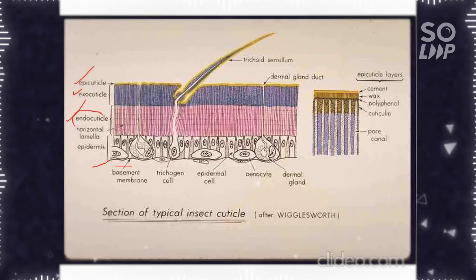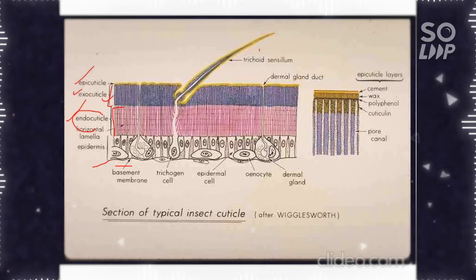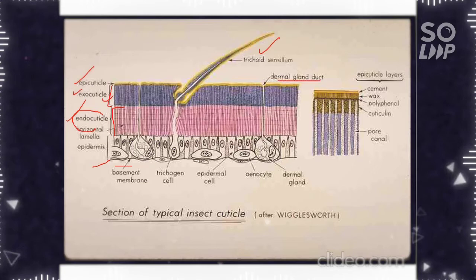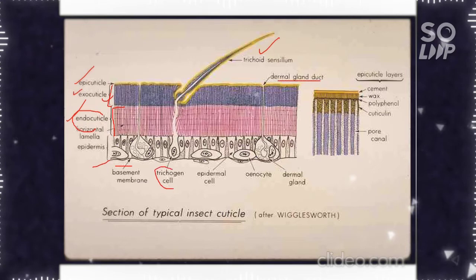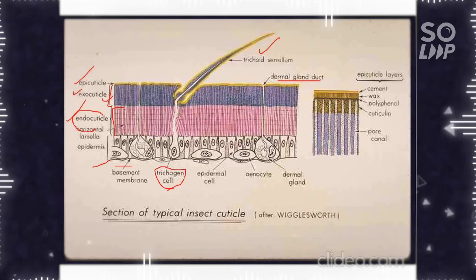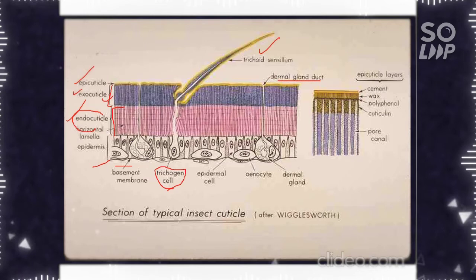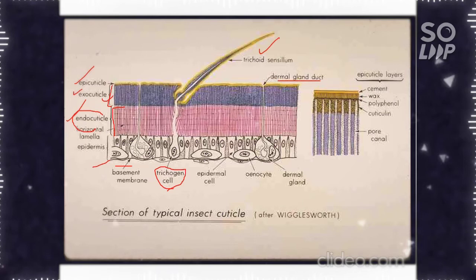Here you can see that the endocuticle is larger in size than the exocuticle and the epicuticle. The hair-like structure is called trichoid sensillum and here you can see the dermal glands and then the trichogen. The seta-forming cells are called trichogen. The socket-forming cells are called tormogen.